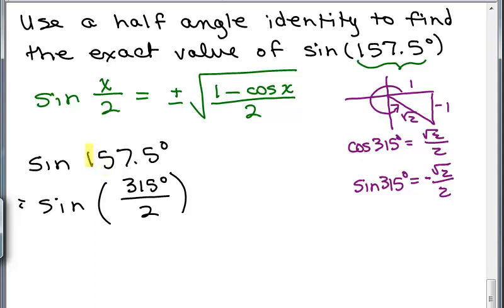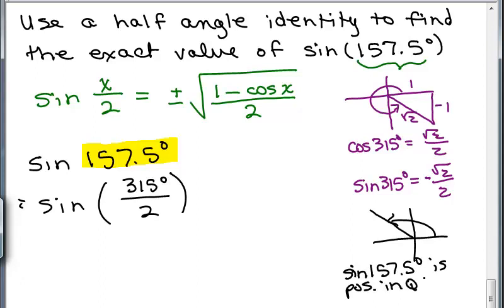The actual angle is 157.5 degrees. So where is that? It's less than 180 degrees, so it's over here in quadrant 2 someplace. In quadrant 2, the sine is positive. So the sine of 157.5 degrees is positive because the angle is in quadrant 2.